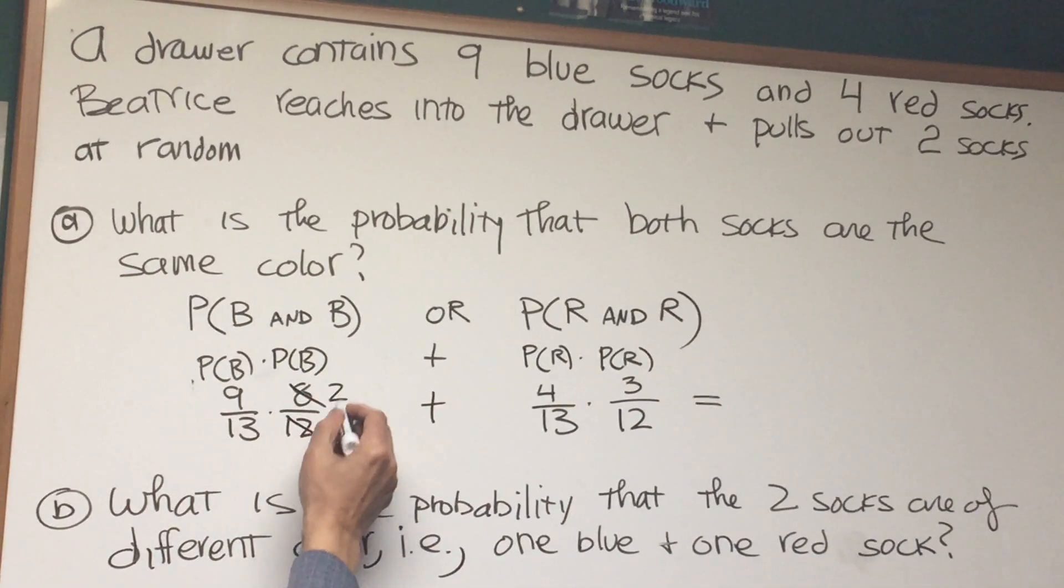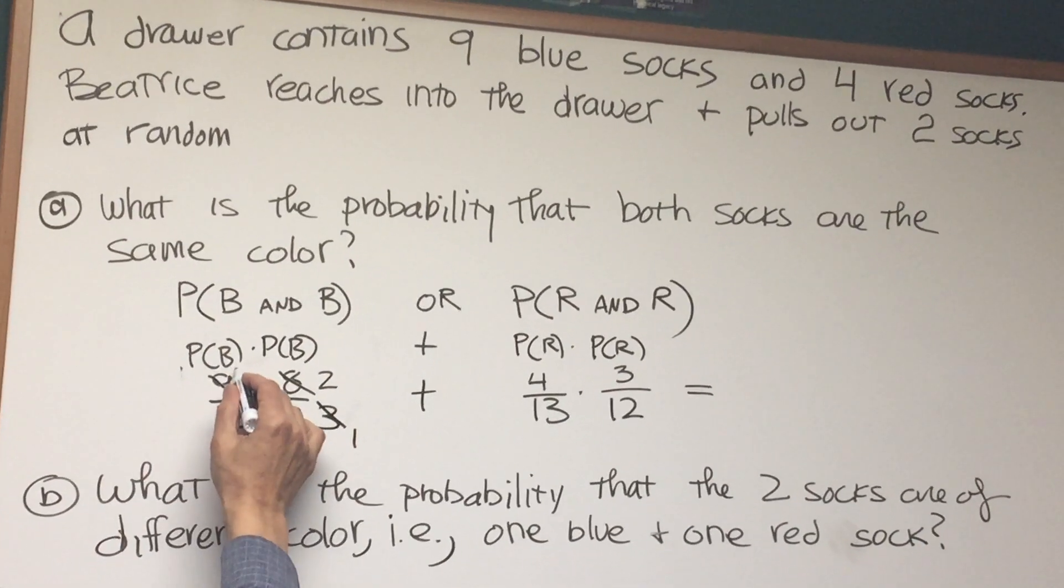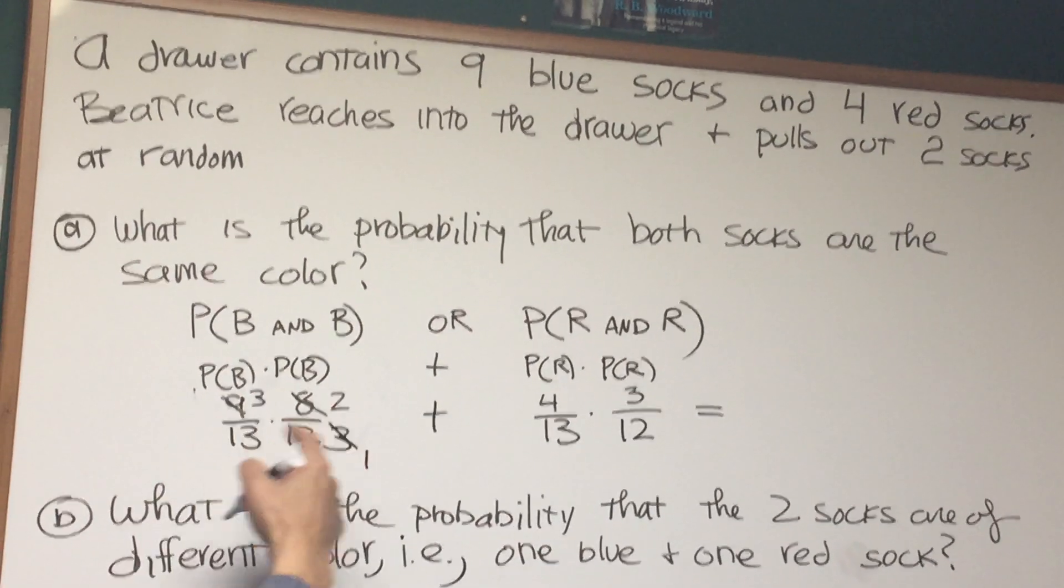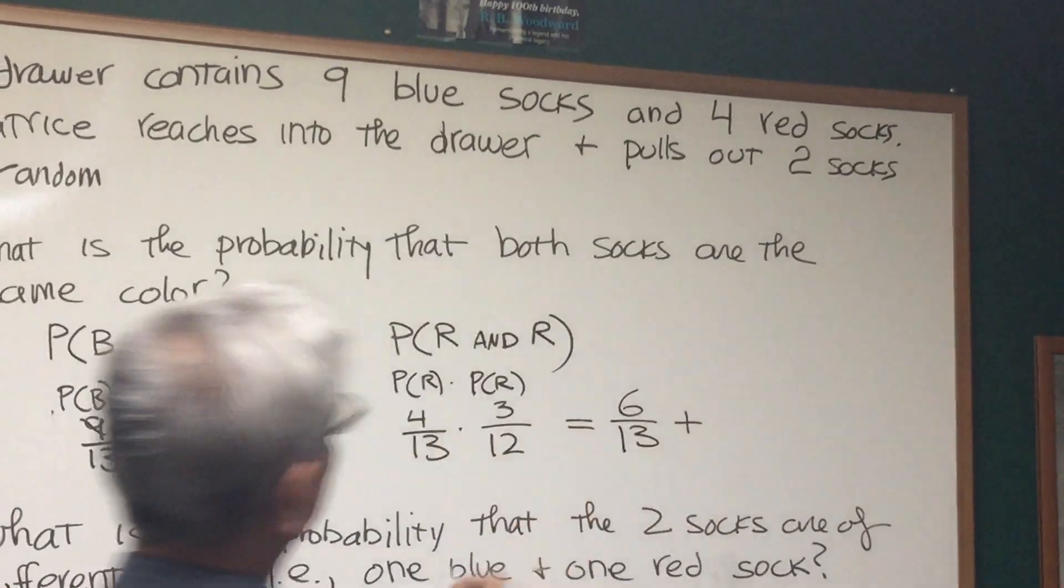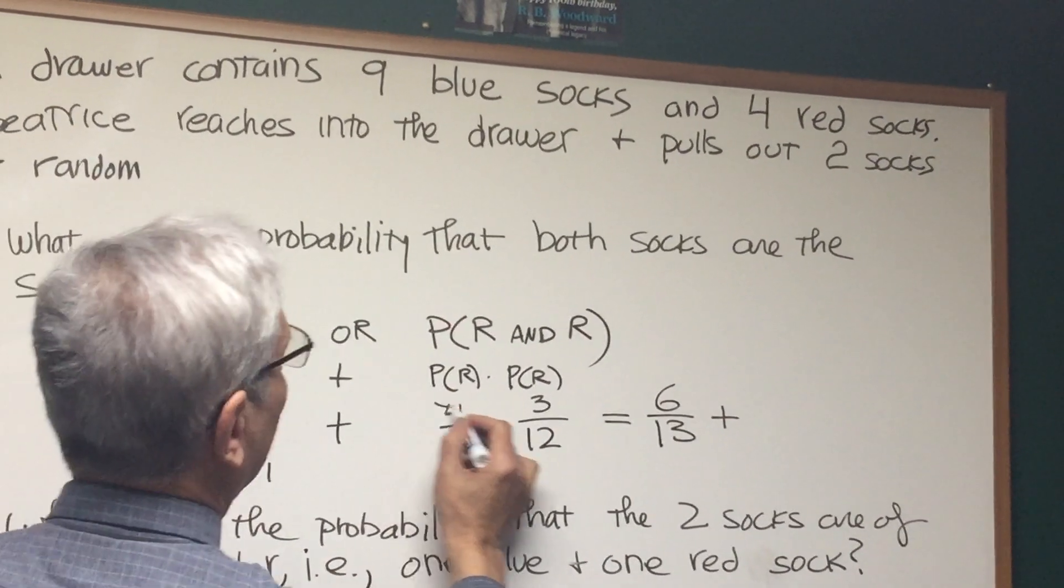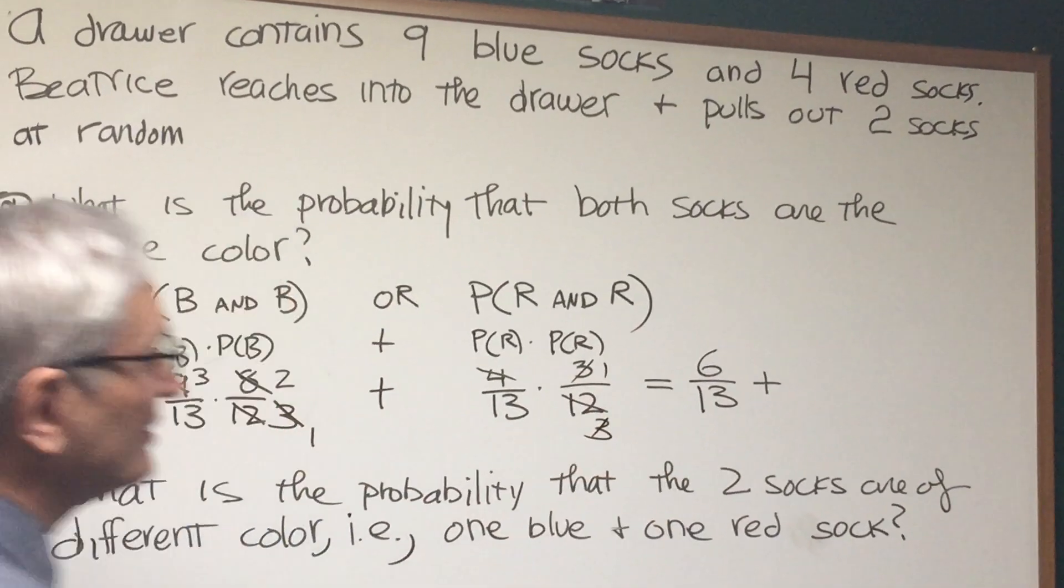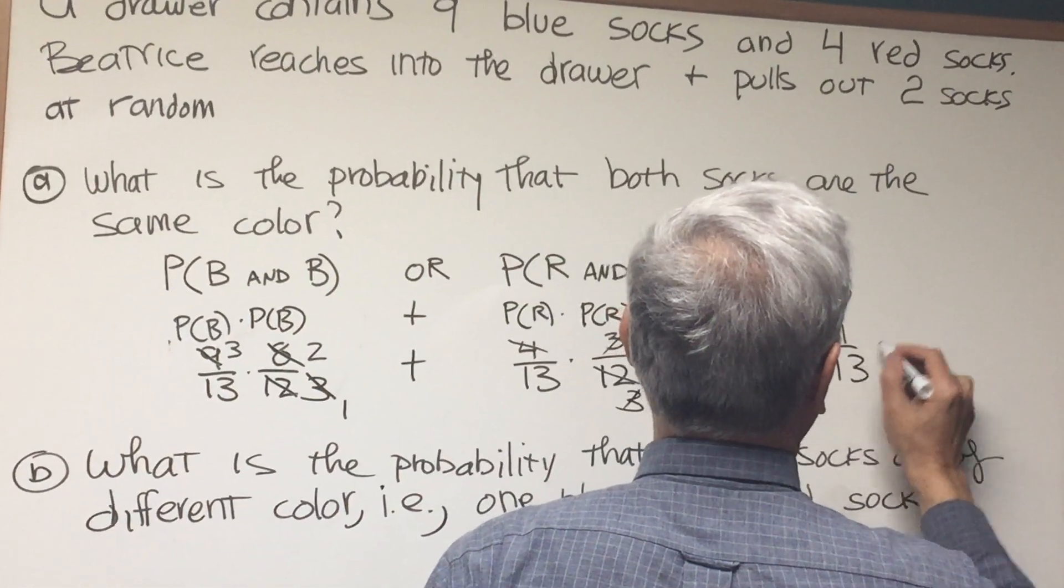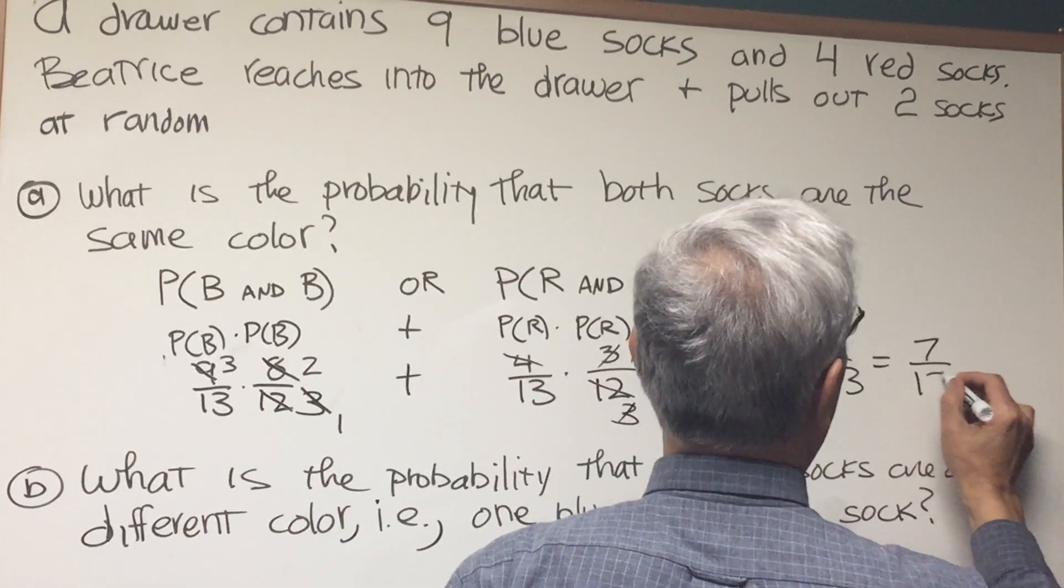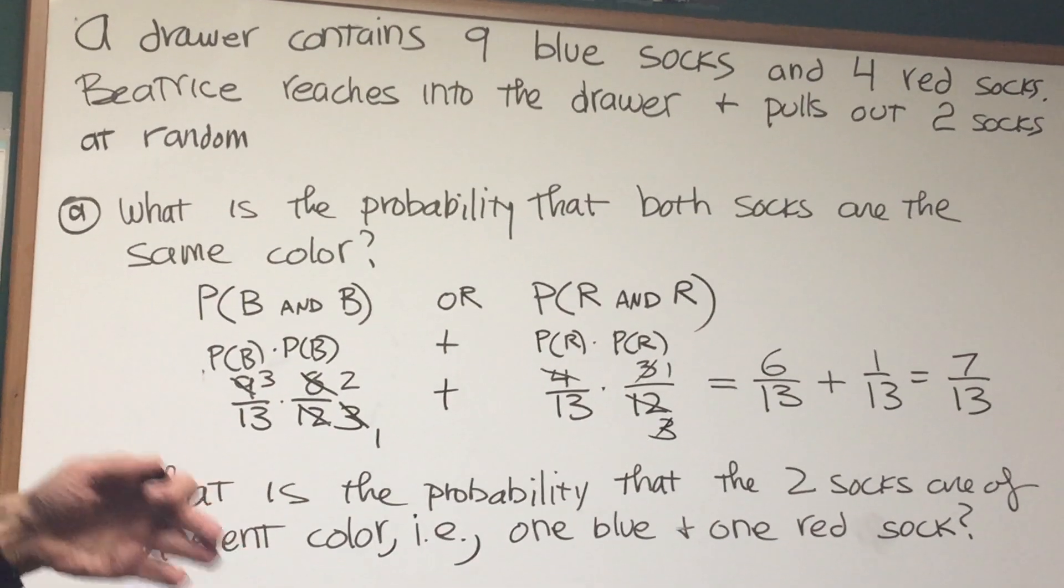8 divided by 12. 4 goes into 8 twice, into 12 3 times. 3 goes into 9 3 times. 3 times 2 is 6, so that's 6 thirteenths plus, and let's see, if 4 goes into 12 3 times, the 3s cancel, that's 1. So it's 6 thirteenths plus 1 thirteenth, and the answer is 7 thirteenths. So that's the probability of picking 2 socks out of that drawer that are the same color.